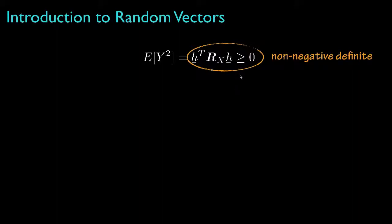Those two properties, that the correlation matrix must be symmetric, and that it must be non-negative definite, are characteristics that all correlation matrices must possess.